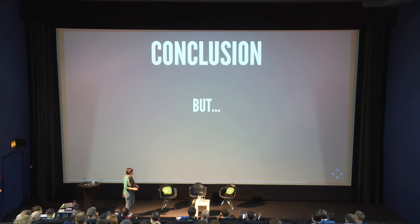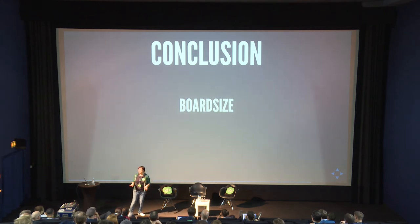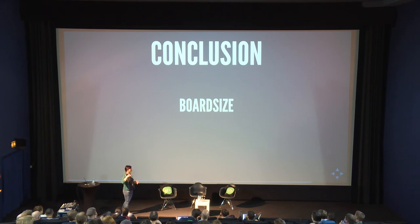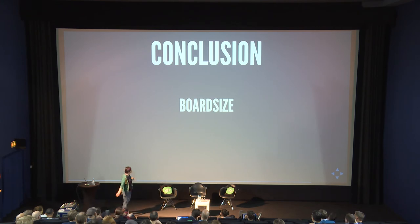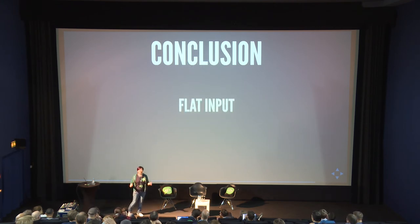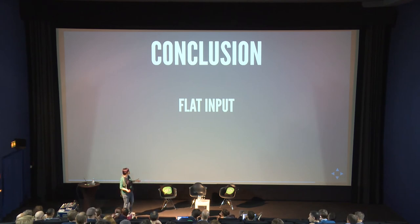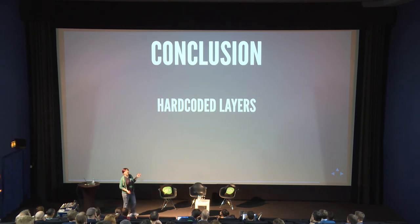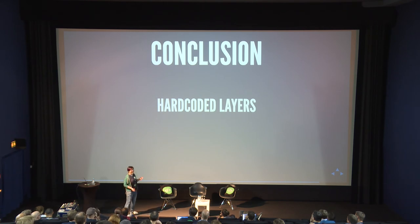There are some limitations to this prototype. One is the board size — it's fixed at 4x4, and as the board fills up it gets really hard. There might be a limit to how much this system can learn. Another issue is the flat input — we use a one-dimensional array but our board is two-dimensional, so there might be vertical correlations the system misses. Also, the library originally only had one layer and I hard-coded a second layer in.